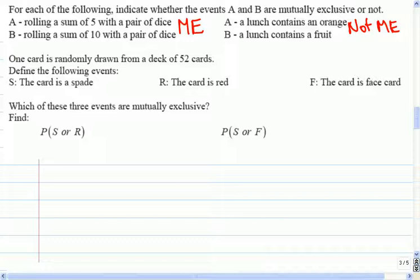Let's make these three events. S, the card is a spade. R, the card is red. And F, it's a face card. Which of these three events is mutually exclusive? What did you think, Michael? Yeah, so because the spade is a black card, we cannot be a spade and a red card at the same time. So S and R must be mutually exclusive. They don't happen at the same time.